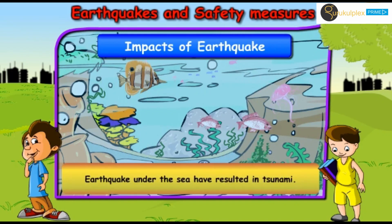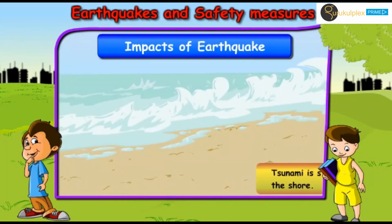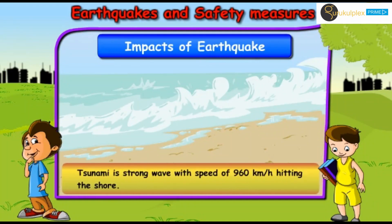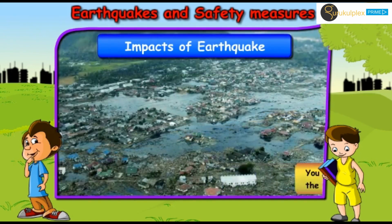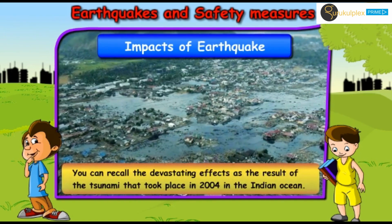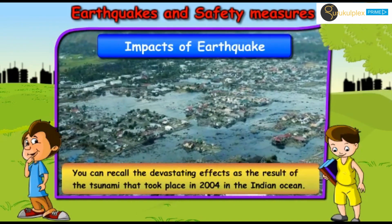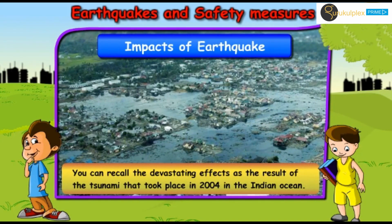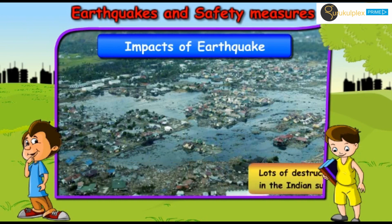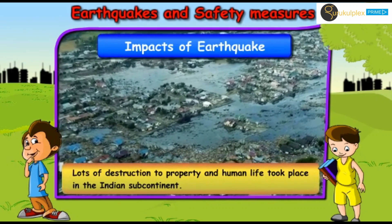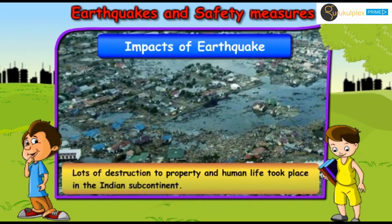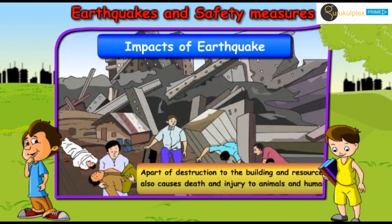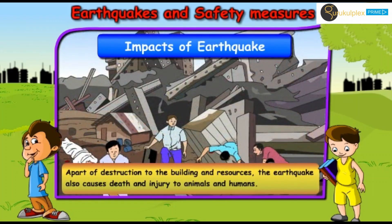Earthquakes under the sea have resulted in tsunamis. A tsunami is a strong wave with a speed of 960 km per hour hitting the shore. You can recall the devastating effects of the tsunami that took place in 2004 in the Indian Ocean, where lots of destruction of property and human life took place in the Indian subcontinent. Apart from destruction to buildings and resources, earthquakes also cause death and injury to animals and humans.